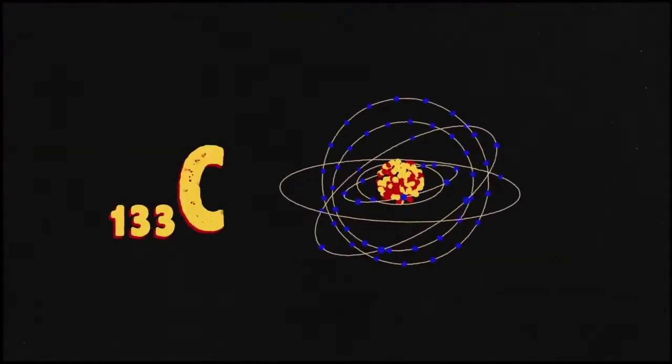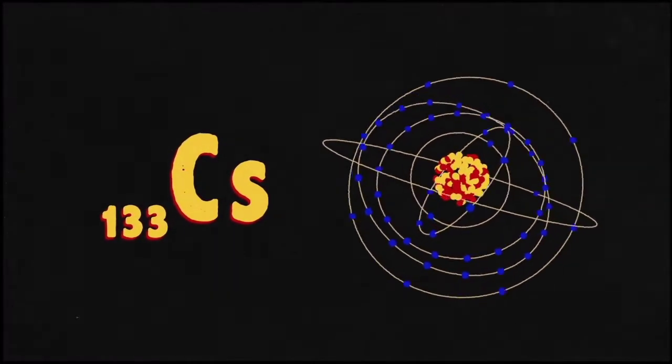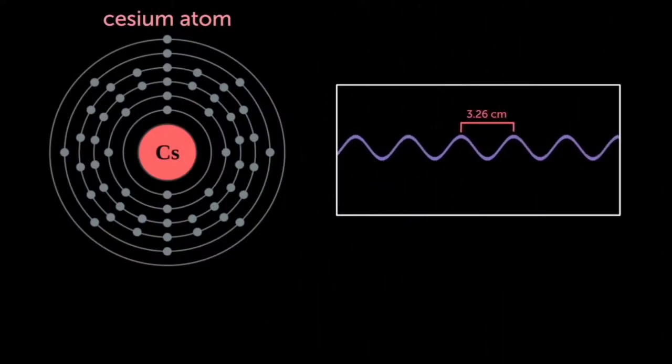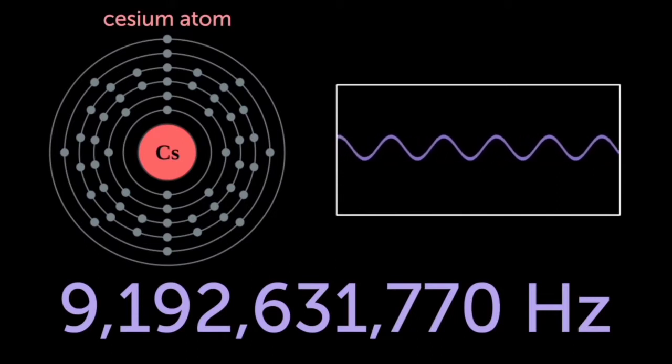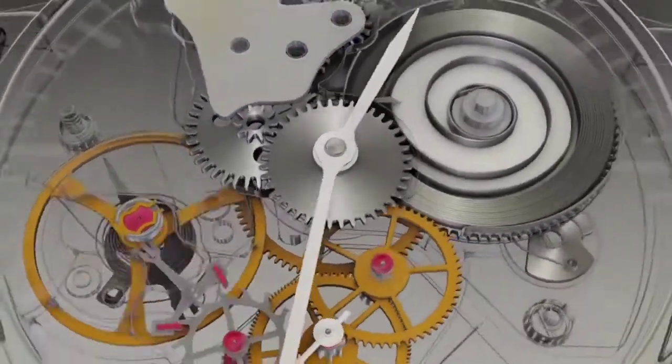If you take an atom of cesium and ask it to oscillate, it will oscillate at exactly the same frequency as any other atoms of cesium. This level of accuracy is completely different from the accuracy of other clocks.